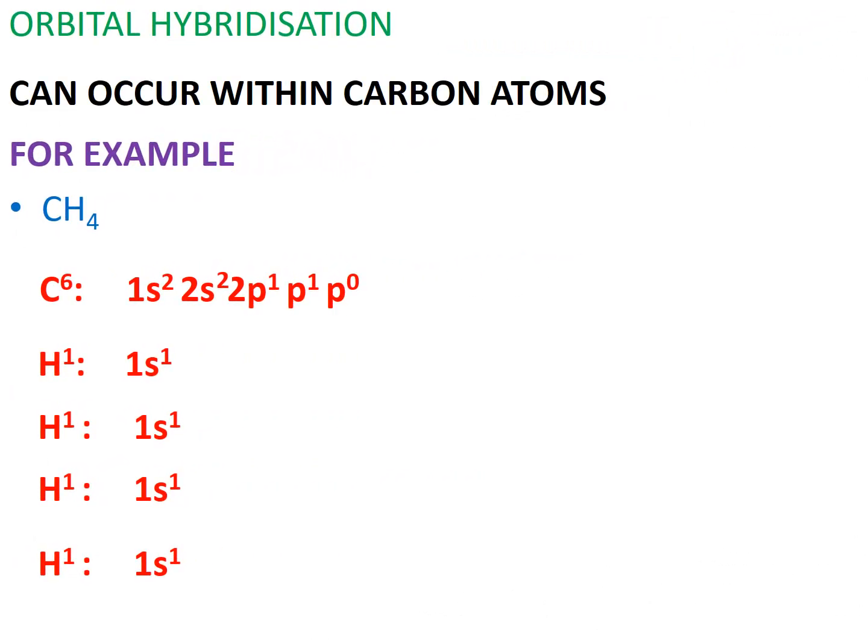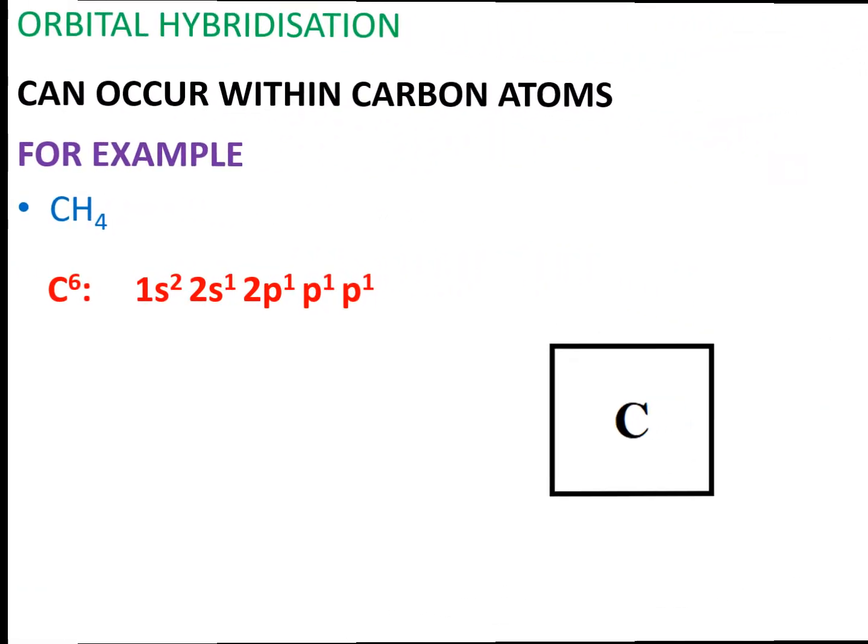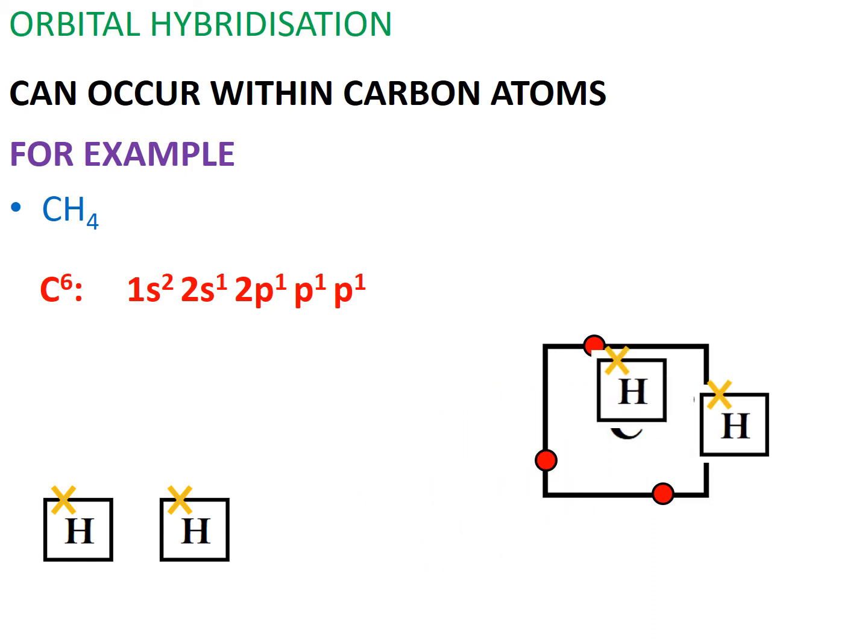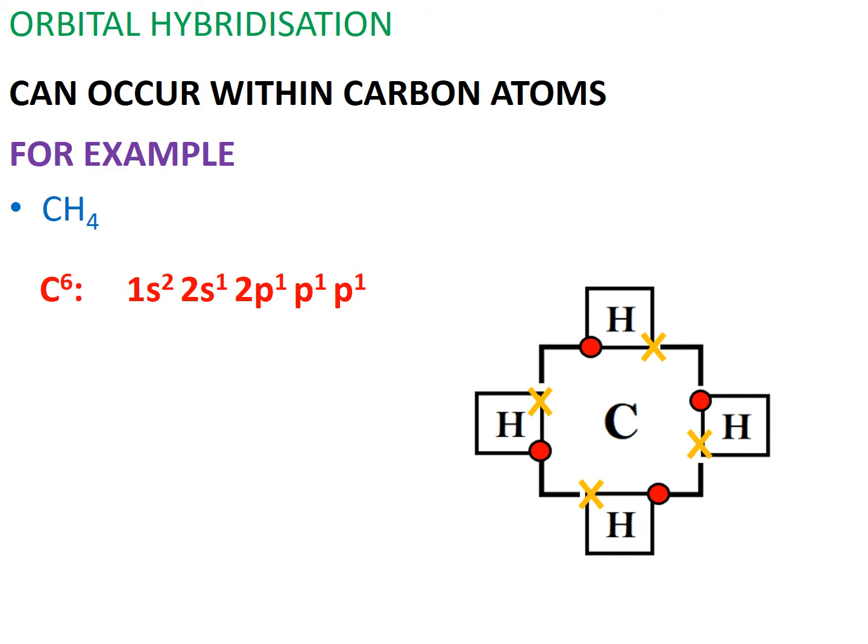So let's return to carbon. In order for carbon to form four covalent bonds with four hydrogen atoms, it had to have undergone hybridization. When we draw the dot-cross diagram for methane, carbon's valence shell is made up of four unpaired electrons, which forms a covalent bond with each of the four hydrogen's 1s electron to give us this dot-cross diagram.